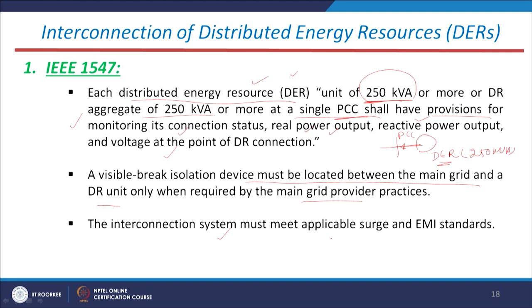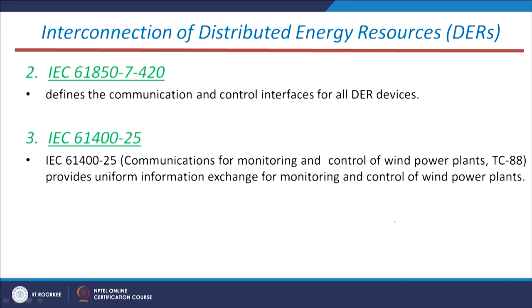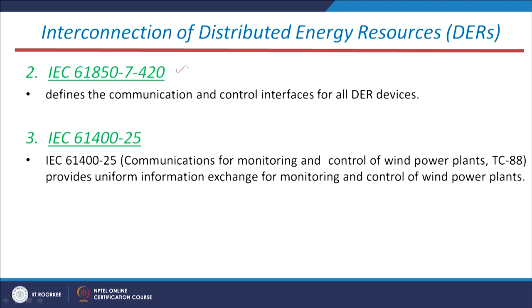The interconnection system must meet applicable EMI — electromagnetic interference — standards. IEC 61850-7-420 defines the communication and control interface for all DER devices. It is a communication protocol standard describing how to interface all DER devices through the communication medium to the main grid.